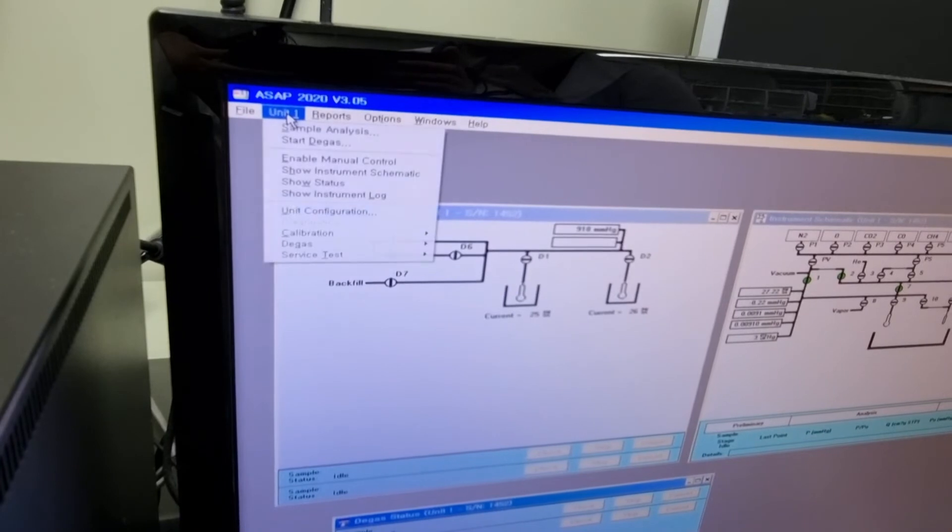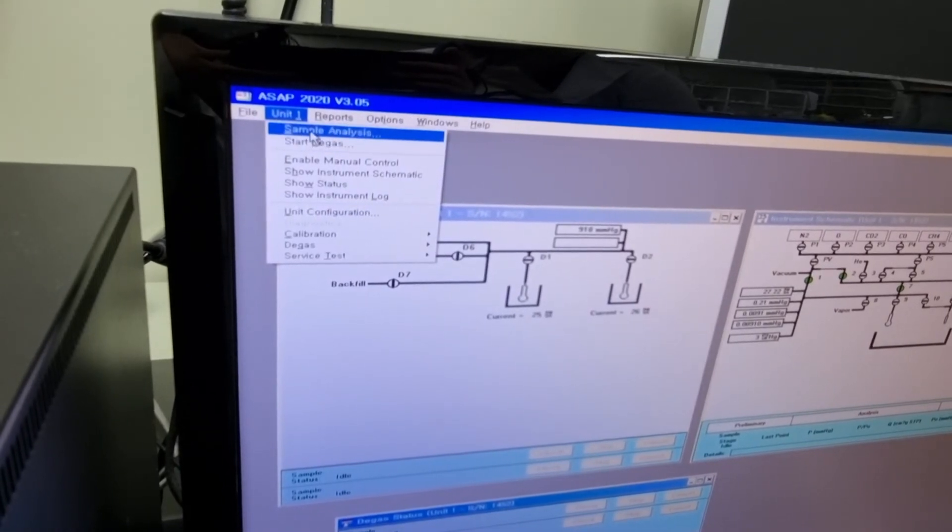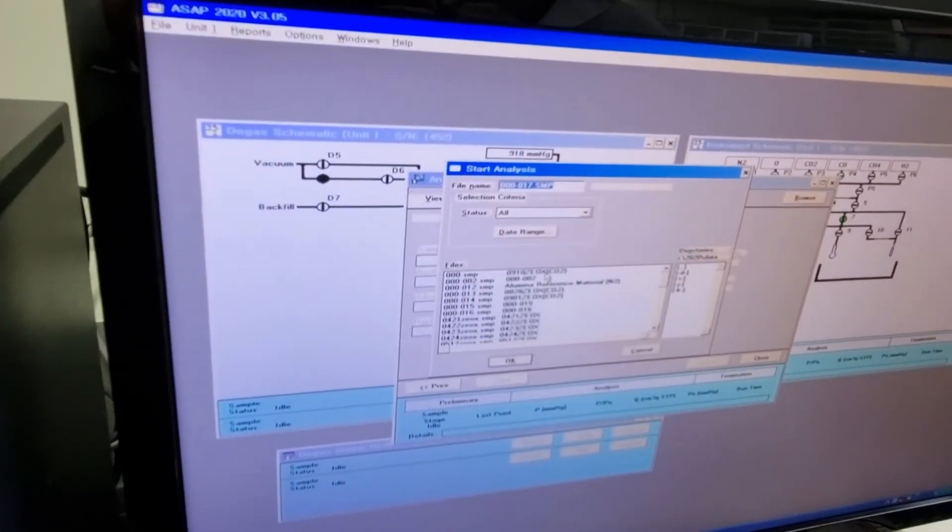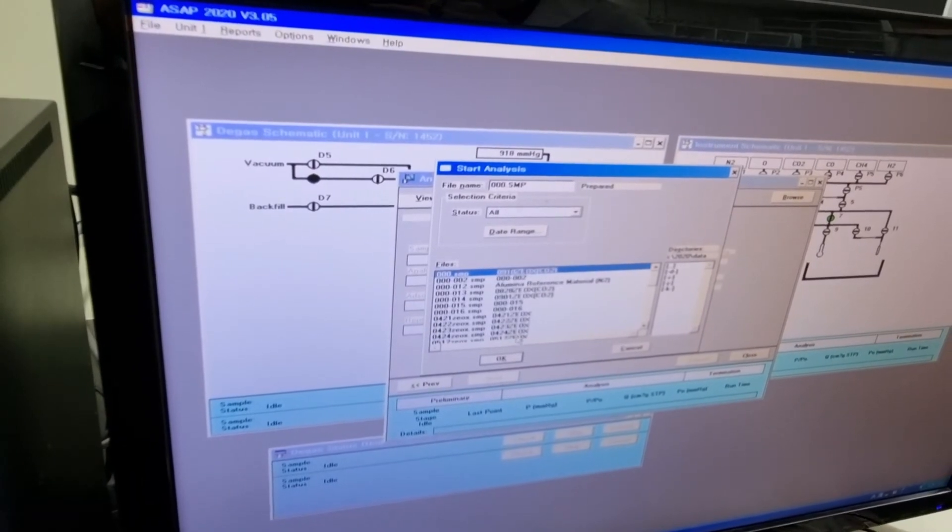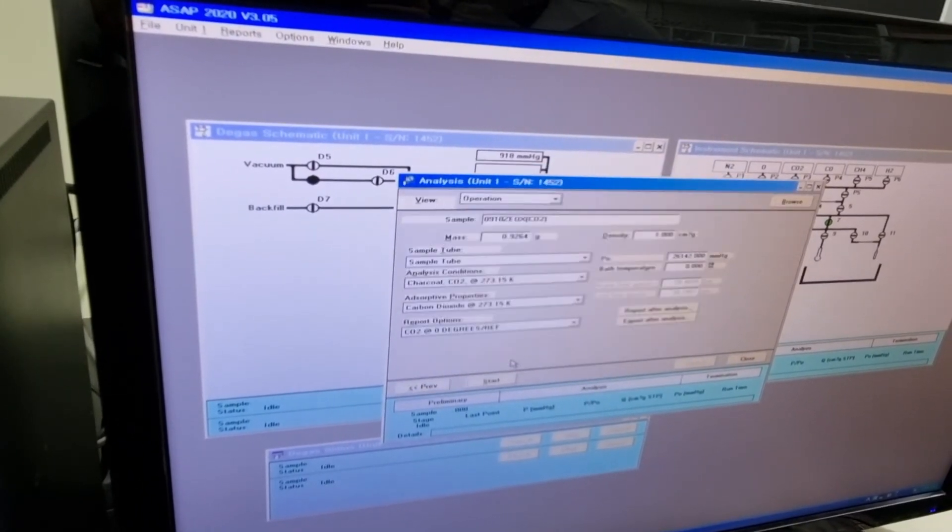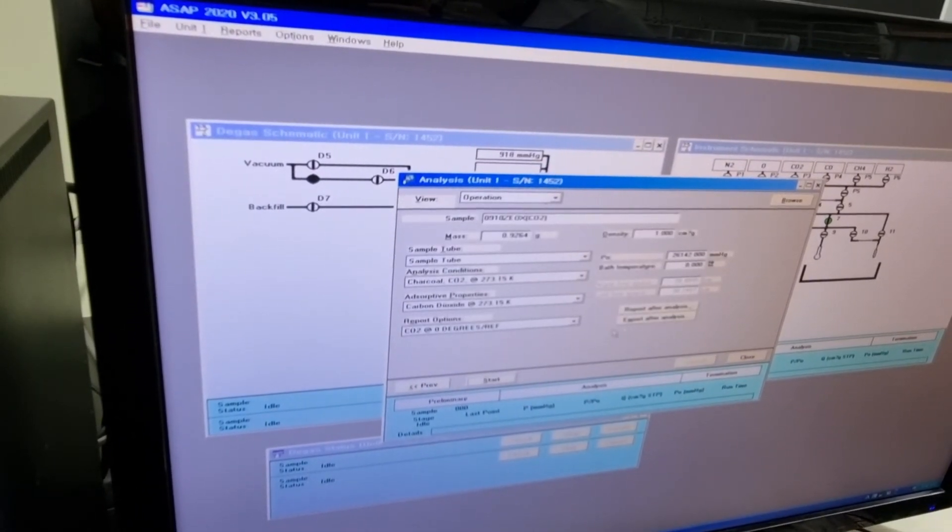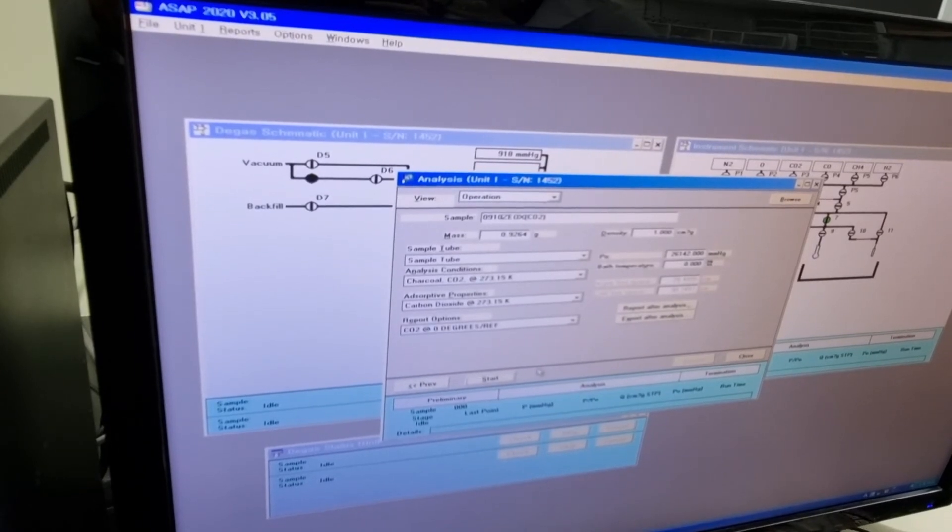Start the analysis. You can go into unit 1, sample analysis, and click what you made for your information file. Check one more time about your condition and data.